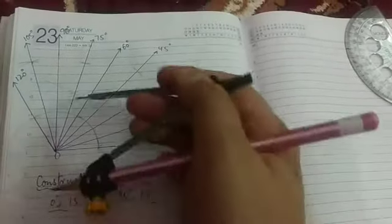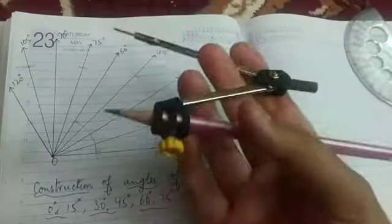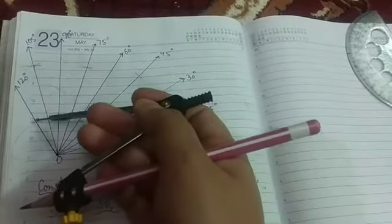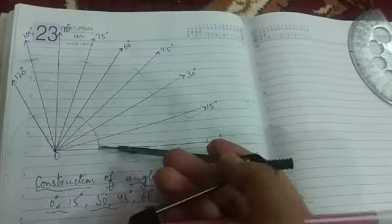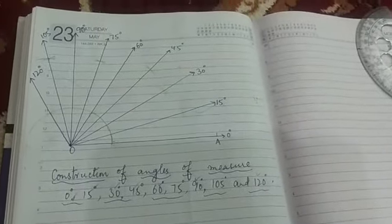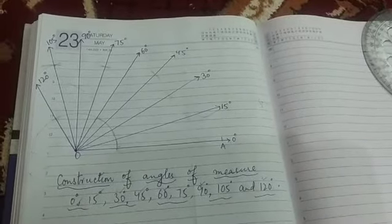But just ek cheez khayal mein rakhna ki arcs jo humein deni hai, woh humein in point se nahi deni hai. Arcs humein un point se deni hai jaha pe jo bhi line hai, woh yahan pe kat kar rahi hai. For example, iski arc mujhe yahan se deni hai, iski yahan se, iski yahan se. In sabki arcs mujhe in point se deni hai. So I think that's all for today. Aap yeh samajh gaye hai, and in the next lecture we will now comfortably can start our construction part.